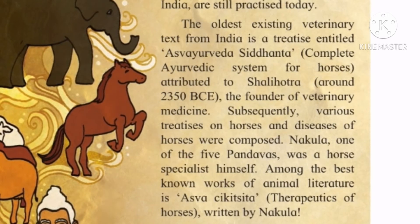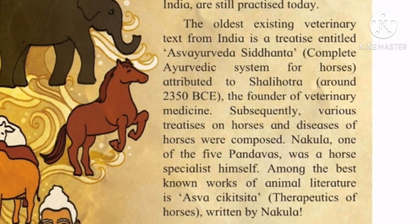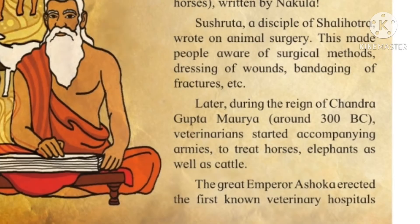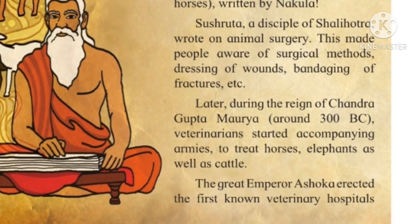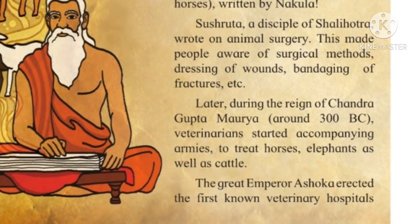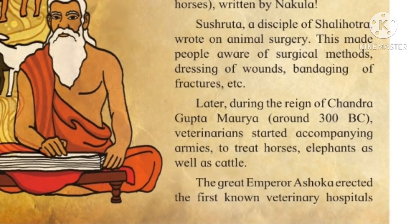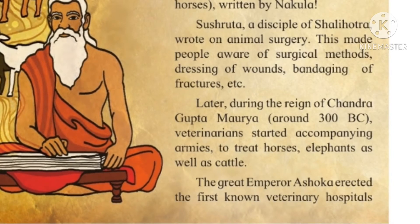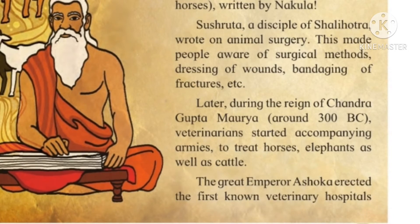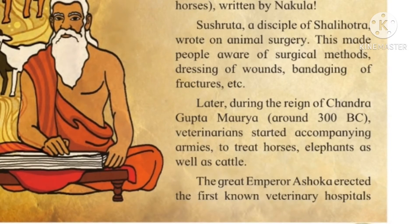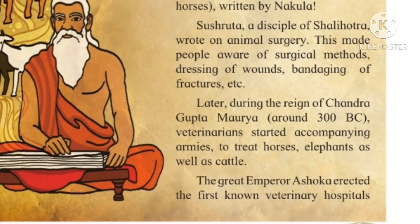Among the best known works of animal literature is Asvachikitsa — Therapeutics of Horses — written by Nakula. Among the five Pandavas — Arjuna, Bhim, Nakula and others — Nakula was very famous for horse treatment. He was specialized and even wrote various books on horses. Shrut, a disciple of Shalihotra, wrote on animal surgery, making people aware of surgical methods, dressing of wounds, bandaging of fractures, and so on.